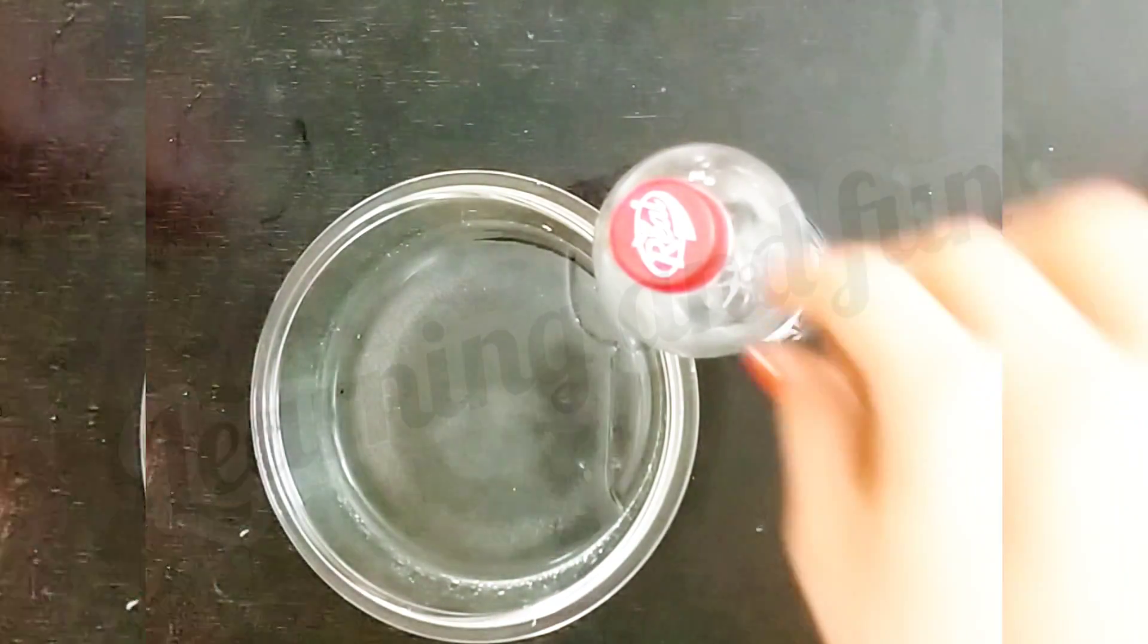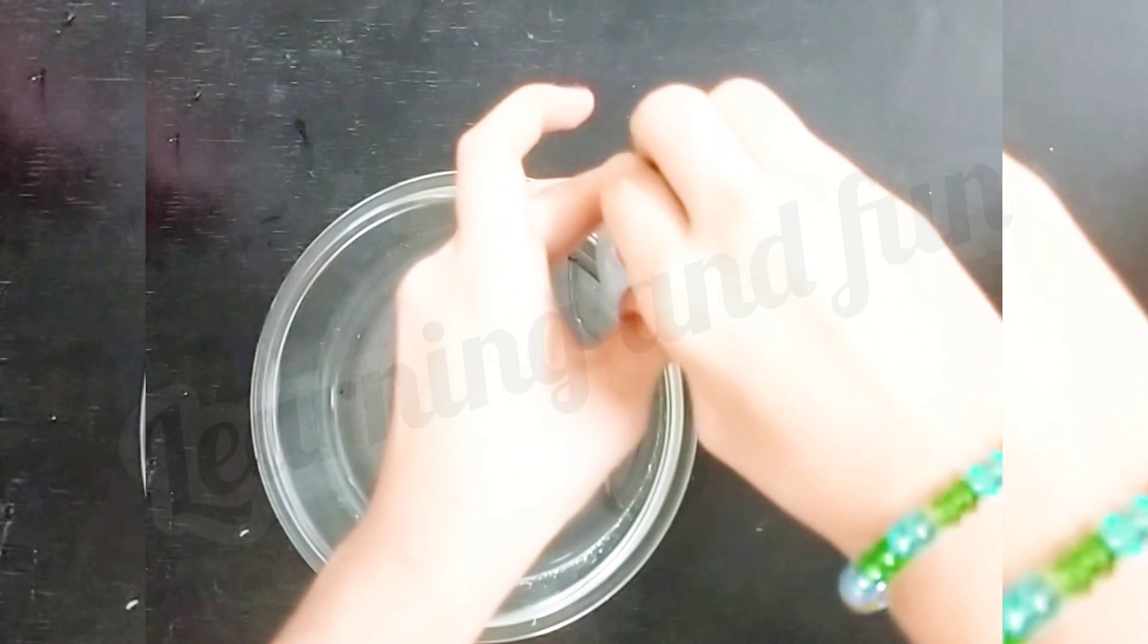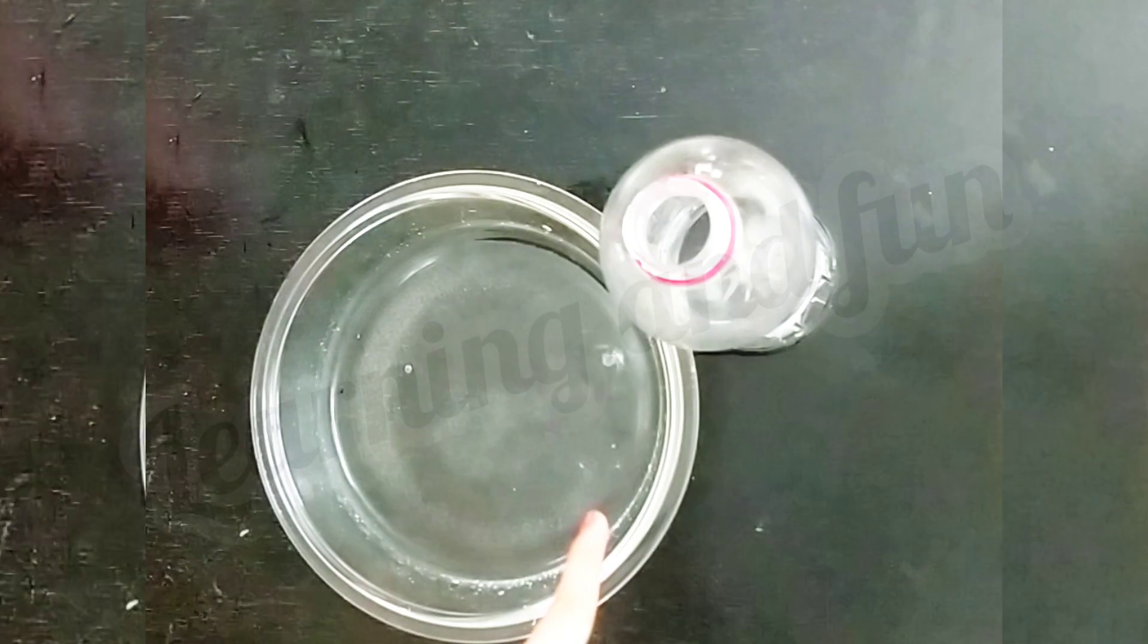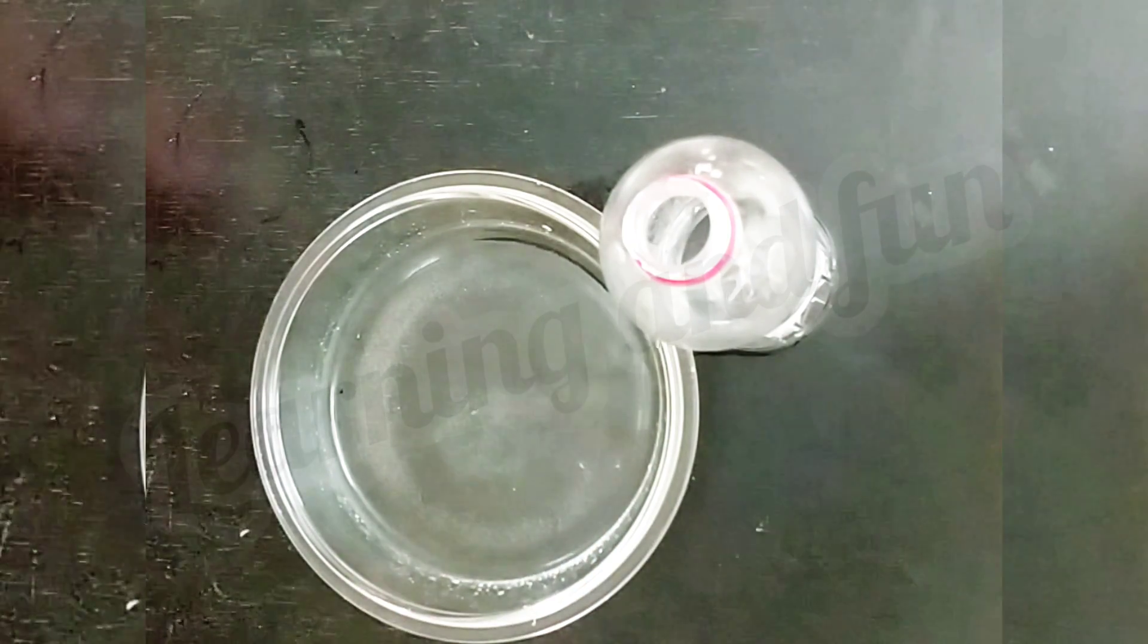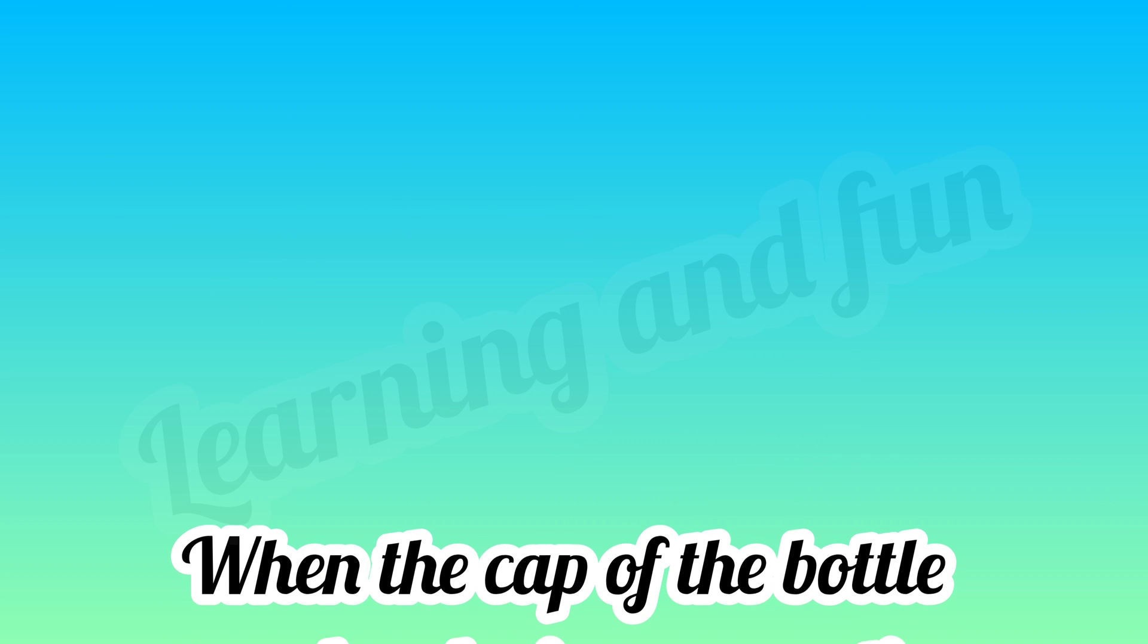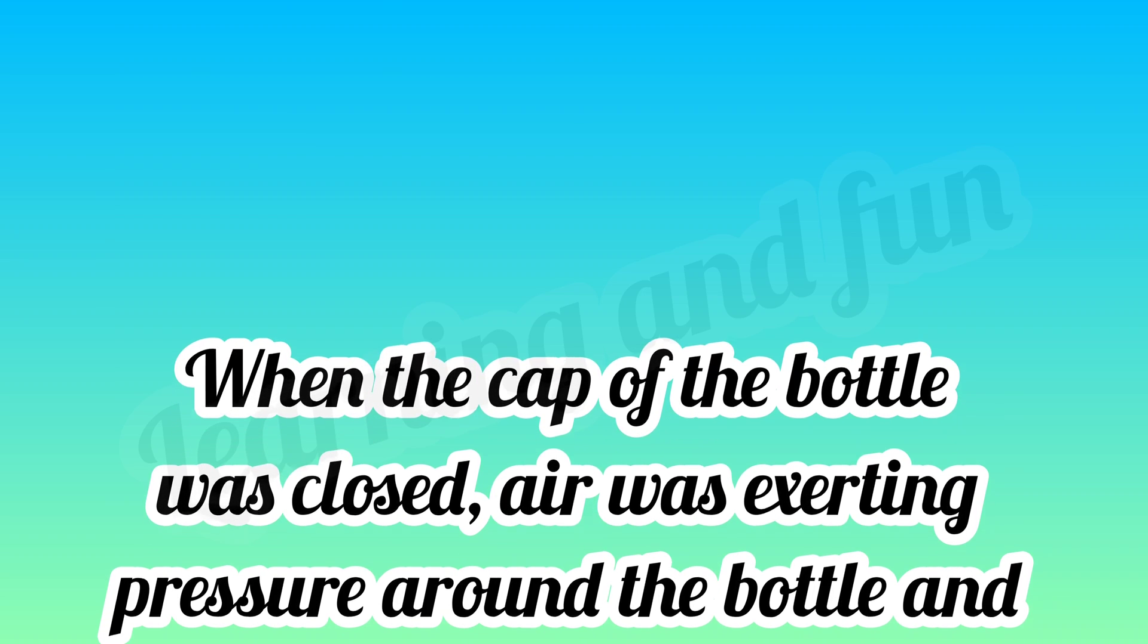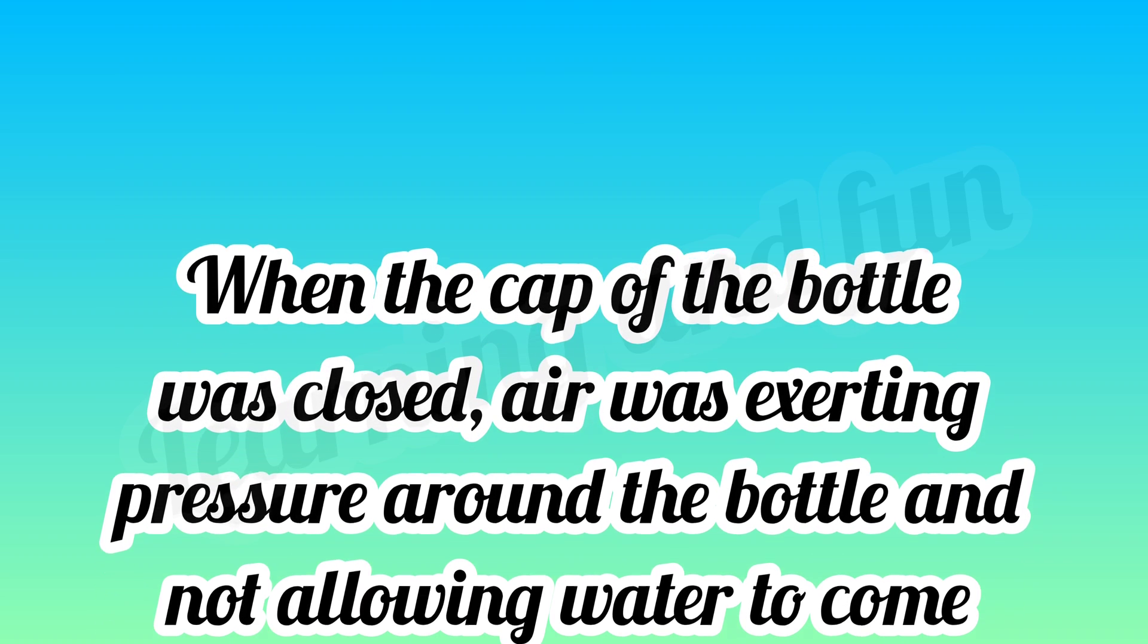And now we will take out the cap of the bottle again, and we will see that water has started flowing again. So why has this happened? It happened because when the cap of the bottle was closed, the air was exerting pressure around the bottle and not allowing the water to come out.